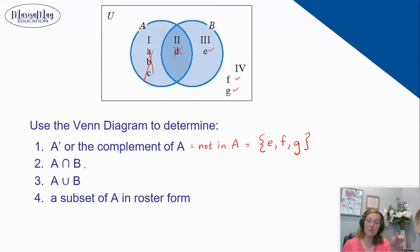Let's take a look at number two. A with this upside down U B means A and B. So in this case we're looking for the overlap. What items are in the overlap? In this case that is just the D. That's the only one that's in the overlap between A and B.